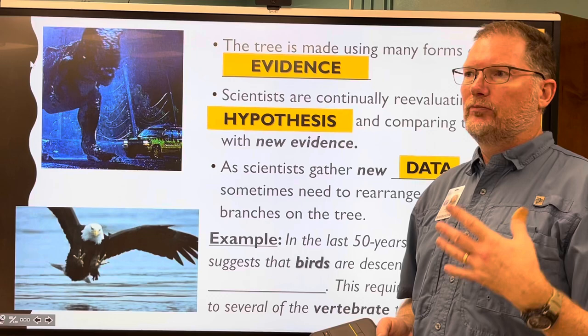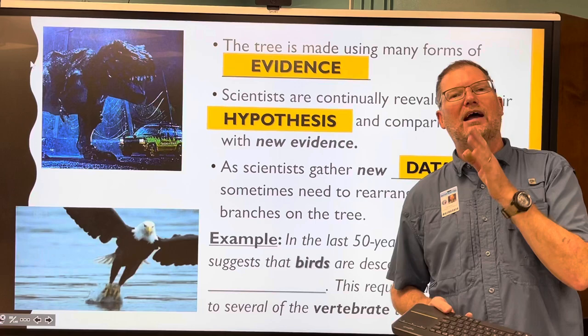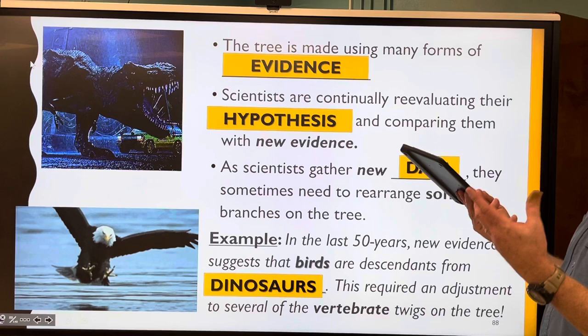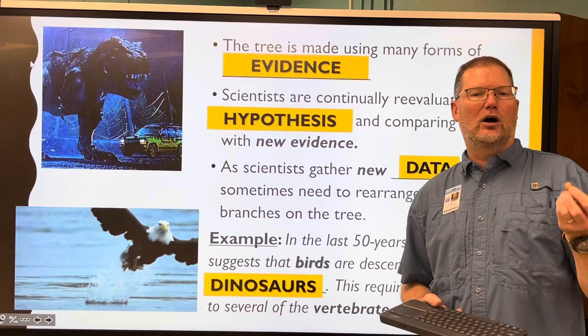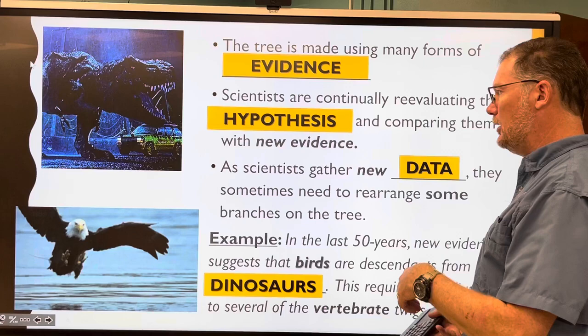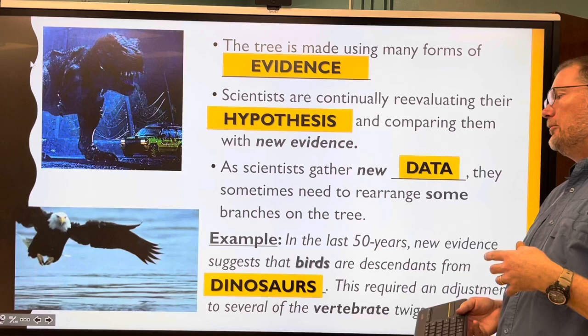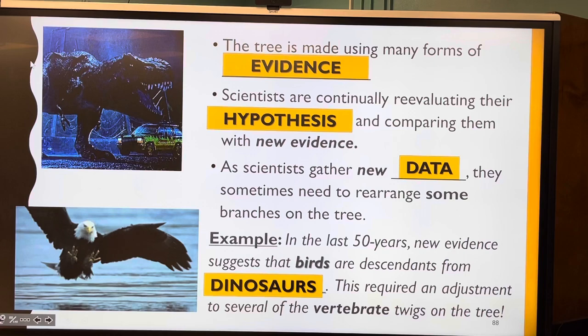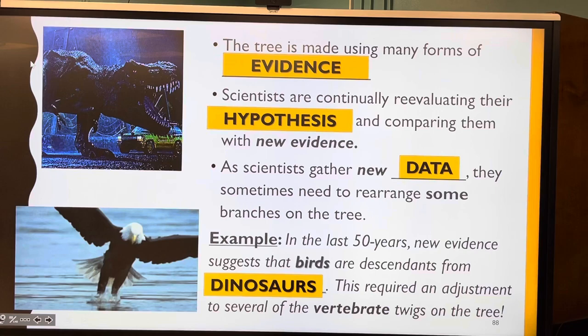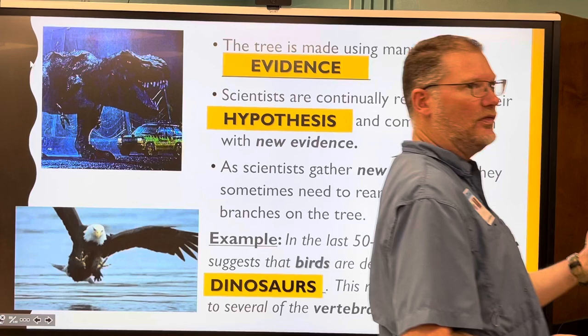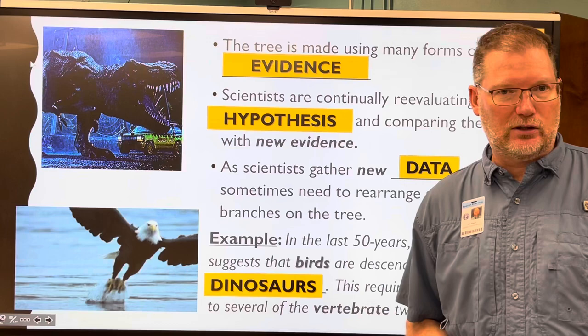In the last 50 years, new evidence suggests that birds are descendants of dinosaurs. Michael Crichton used this idea in Jurassic Park. That discovery required an adjustment to several of the vertebrate twigs on the tree — and when you're adjusting the vertebrate twigs, that's big news. Learning that something everyone thought was related to one thing is actually not upsets the whole scientific community, in a good way.